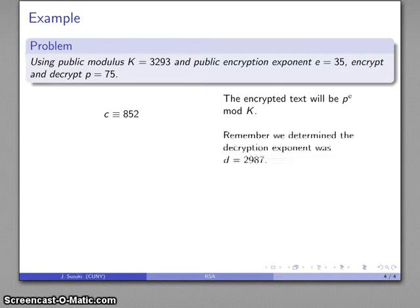Now I want to work backwards. Remember that we determined that the decryption exponent was d equals 2987. What I need to do is take the encrypted message 852, raise it to power 2987, and then reduce it mod 3293. I'm going to add 852 raised to the power 2987, and after all the dust settles, I get p equals 75, and I recover the original message.